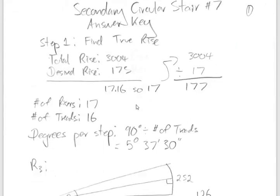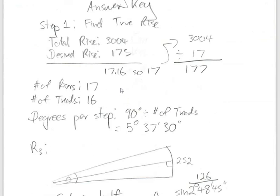Step one: we find our true rise. This should be second nature for anyone in a fourth year carpentry apprenticeship. Total rise divided by the desired rise usually gives us a decimal, which we round up or down. In this case we round down to 17, then divide the total rise by 17 to get an actual rise per step — 177mm. Number of risers is 17, and treads are always one less, so 16.